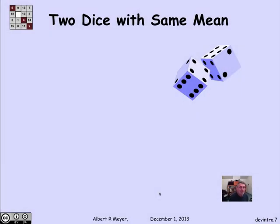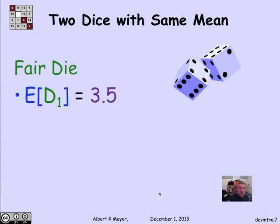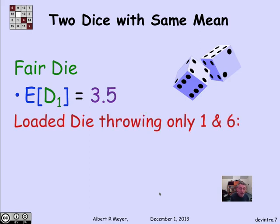Let's look at an example to crystallize the ideas a little. Let's look at two dice with the same mean. The green die is going to be a standard fair die, in which each of the numbers 1 through 6 has an equal probability of showing up, and its expected value is exactly going to be the midpoint between 1 and 6, or 3 and 1/2.